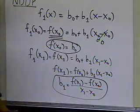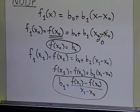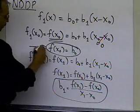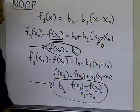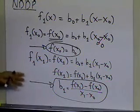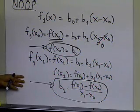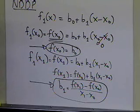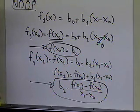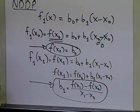What's different from the direct method is that the unknown coefficients b0 and b1 are found without having to solve two simultaneous linear equations. We're still solving two equations, but they don't have to be solved simultaneously. That's the beauty of Newton's divided difference polynomial method — the coefficients are obtained one at a time, as opposed to using Gaussian elimination or LU decomposition.